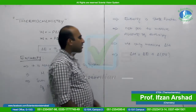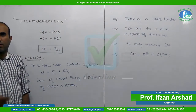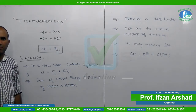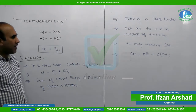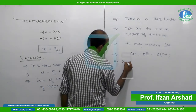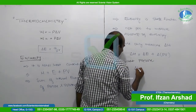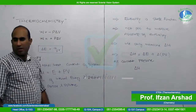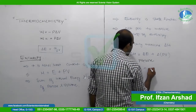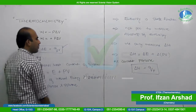Now, if we expand delta(PV) = deltaP·V + P·deltaV, and consider the case at constant pressure, then delta P = 0. So that entire term becomes zero. At constant pressure, delta H — change in enthalpy — equals the amount of heat supplied to the system at constant pressure: delta H = Qp.